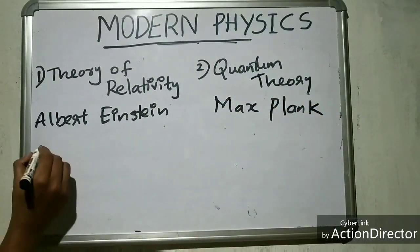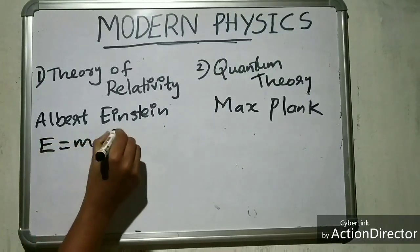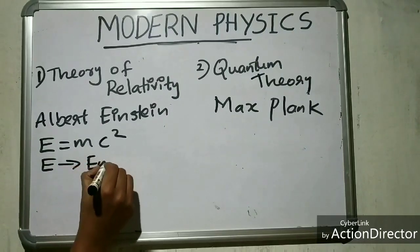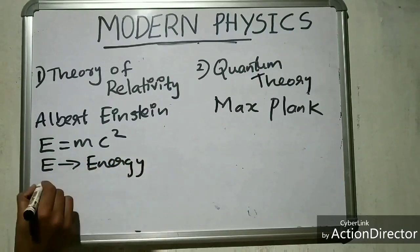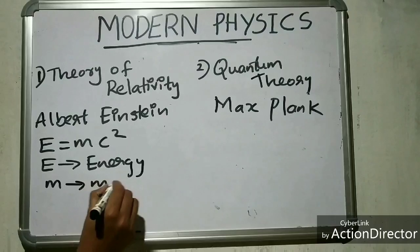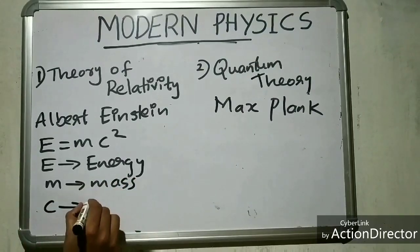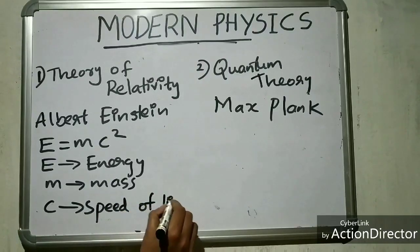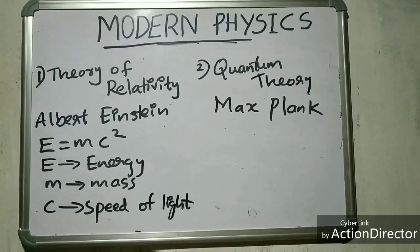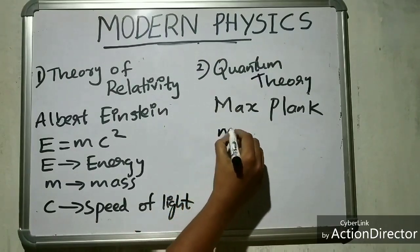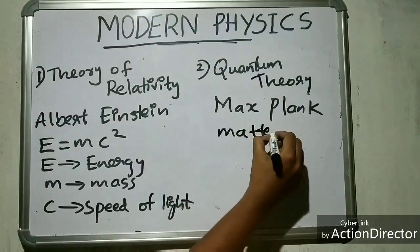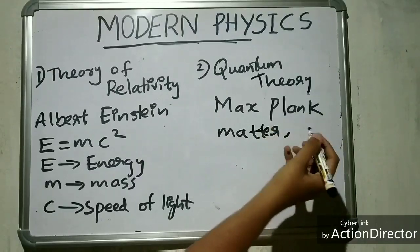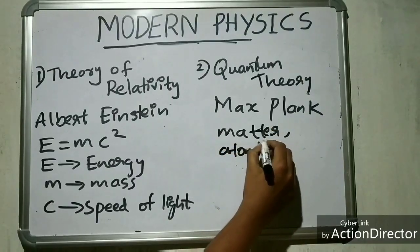Theory of relativity summarized in the formula E is equal to mc square, where E denotes energy, m denotes mass, and c denotes speed of light. Quantum theory is theoretical basis of modern physics that explains the nature and behavior of matter and energy on the atomic and subatomic level.